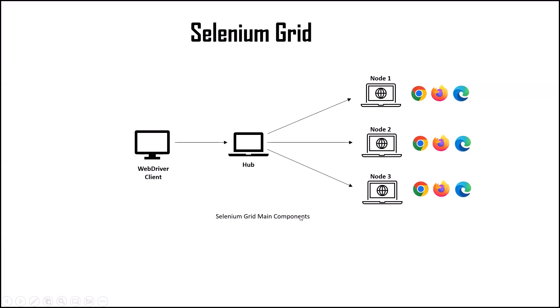Selenium Grid is made up of multiple components, and with the help of those components we can run our automated tests in parallel. Out of those components, the main components are Hub and Nodes. Though I will discuss each component in detail, today let's start with those two main components — Hub and Node.